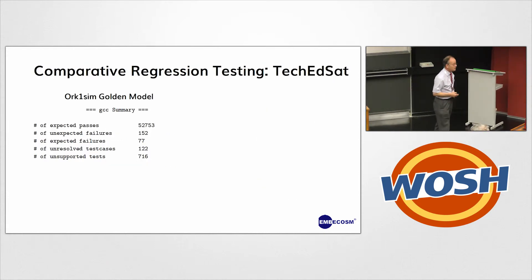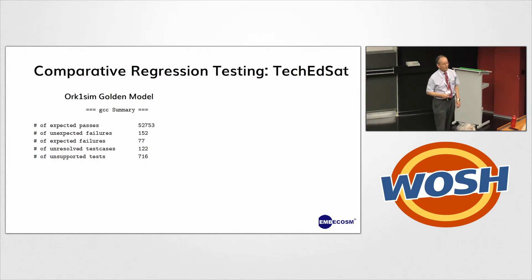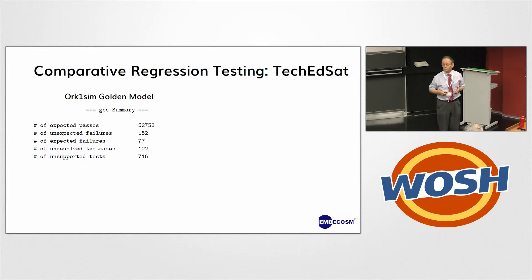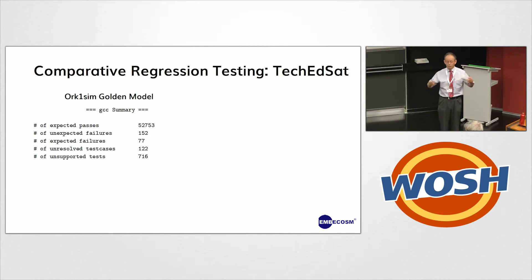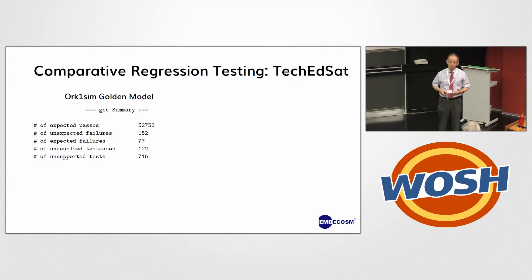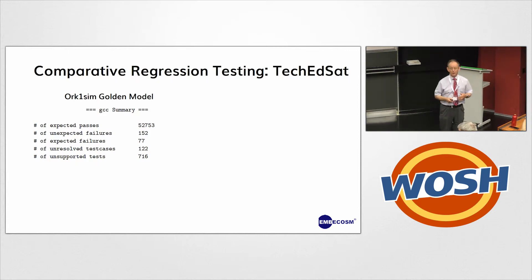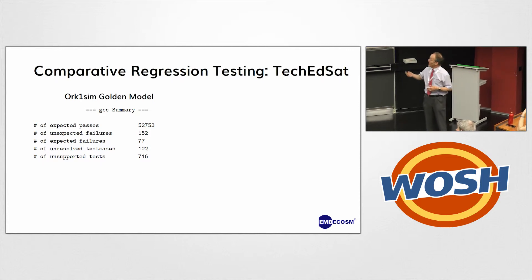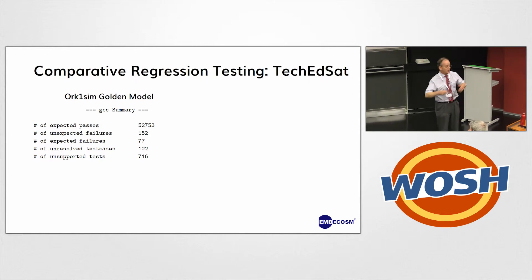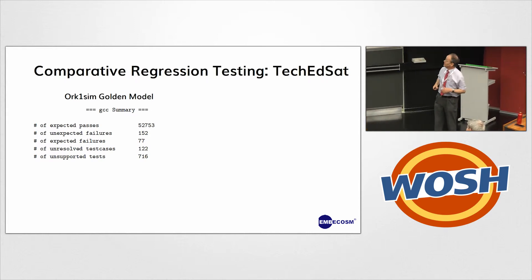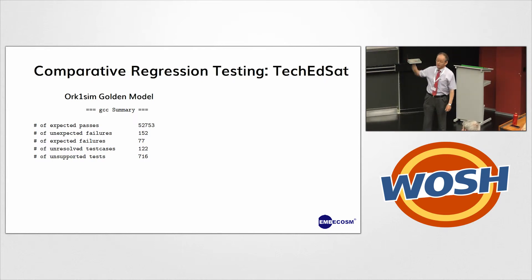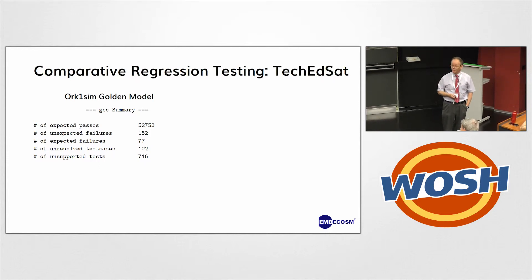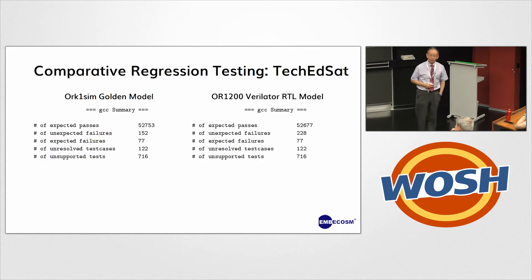Here's an example: TechEdSat, flown by NASA. They used a hardened version of the OpenRISC 1200 in that. NASA insisted that if they were going to use open source hardware, it had to have a decent compiler. OpenRISC always had a GCC but it was a bit flaky. Embecosm were paid to professionally get it all working. We started by getting the compiler going on OR1KSIM, the golden reference model for OpenRISC, and ran the GCC regression test — about 50,000 tests at the time; these days it's more like 100,000 C tests. We could see passes and failures and go away and fix them. We also had the Verilog available, so we could run the same tests using a Verilator model of the Verilog, and because they're supposed to be the same, they should give the same results.